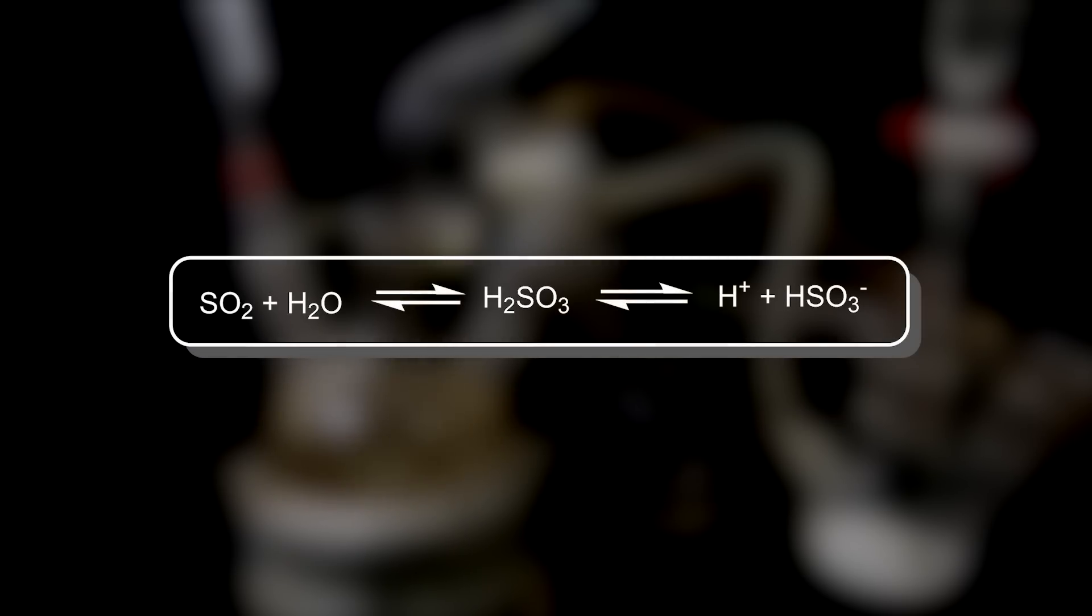In more detail, first, sulfur dioxide reacts with trace amounts of water that is present in the ethylene glycol, as well as pretty much every solvent, to form sulfurous acid. Sulfurous acid does not exist in its free state and dissociates into a proton and a bisulfite ion.